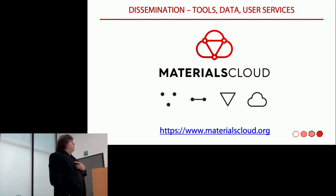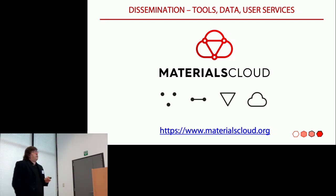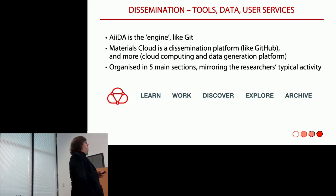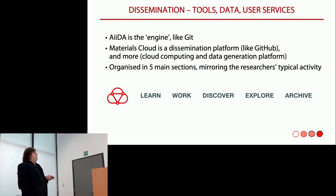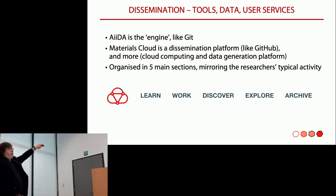The second part I wanted to discuss is a dissemination platform. That is how we actually leverage all this to build an infrastructure where we can disseminate things like tools, data, and user services. And you can actually go and log in here. I think that the people in my group like to make the analogy that if AIDA is the engine, it's more akin to Git, and the Materials Cloud is more akin to GitHub. And the way we have built it is organized in five sections that we call Learn, Work, Discover, Explore, and Archive.